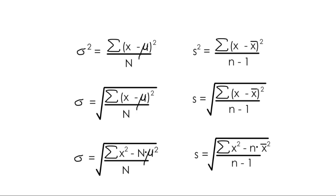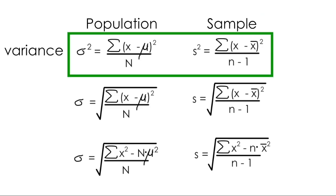We can separate these formulas into two columns, population and sample. We use these when we've collected data from an entire population, like our entire class or our entire town. And we use these when we have only a sample of the population, like some students from our class or some people from our town. Now these top two formulas deal with something called variance, which by definition is really just the square of standard deviation. So let's ignore these to keep this video focused on standard deviation.